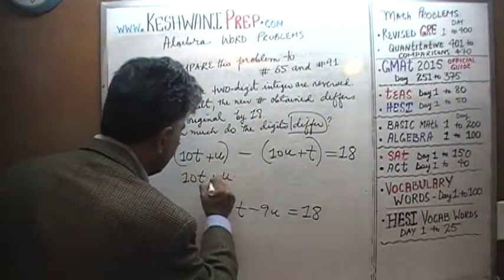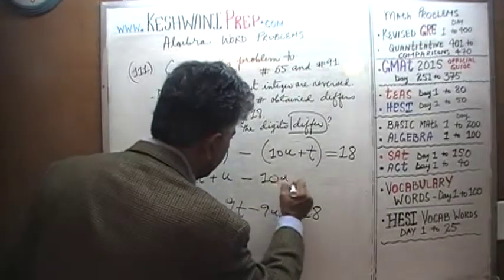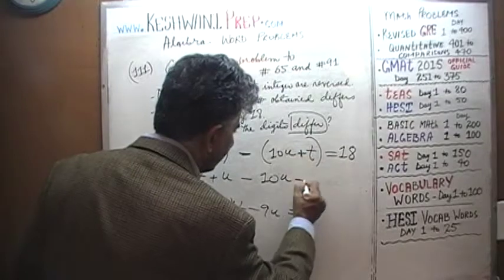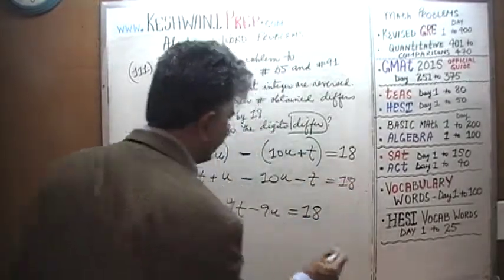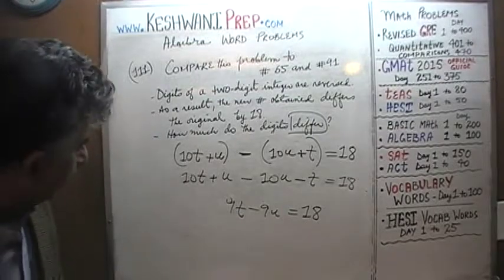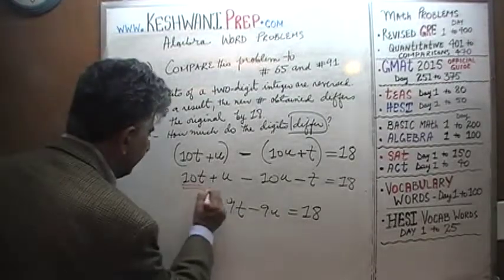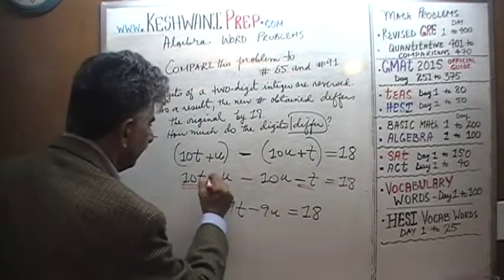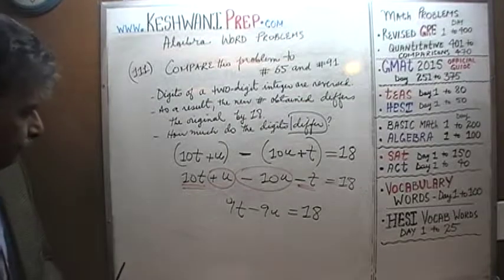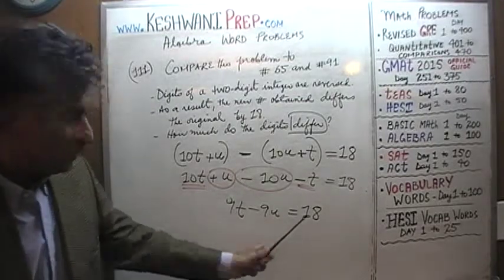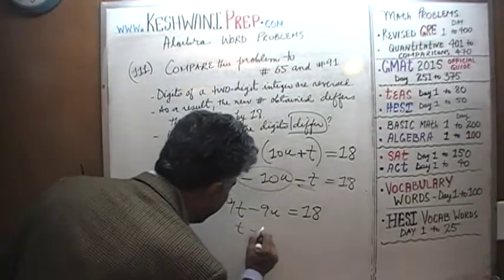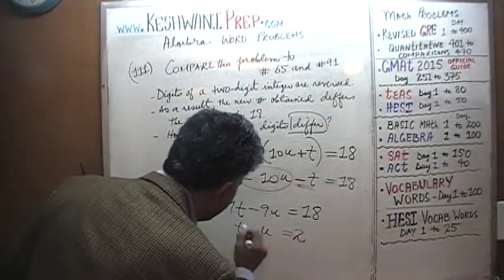Let me rewrite this cleanly: 10t plus u minus 10u minus t. Don't forget the minus sign outside, so the positive becomes negative. This gives us 9t minus 9u equals 18. If you divide the entire equation by 9, we get t minus u equals 2. And there is your answer.